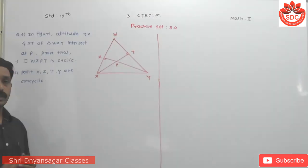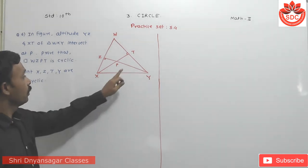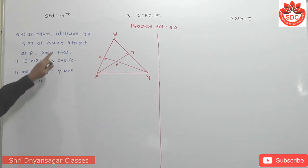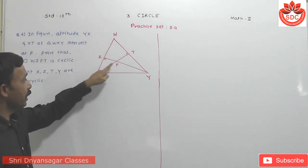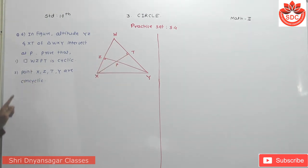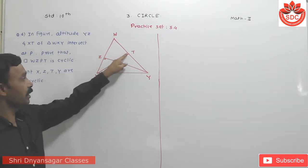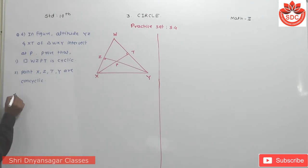We'll see the next question. Question number 6: In this figure, altitudes YJ and XT intersect at point P. WXY intersect at point P. Prove that WJPT is a cyclic quadrilateral, and that points X, Z, T, Y are concyclic. The given is everything stated above, and these two are the things to prove.